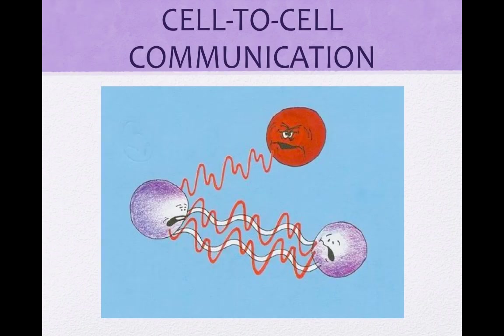Cell-to-cell communication is absolutely essential for multicellular organisms. In order for an organism to develop, survive, and reproduce, its billions of cells must communicate to coordinate activities. Biologists have discovered universal mechanisms of cellular regulation, which is evidence for the evolutionary relatedness of all life.